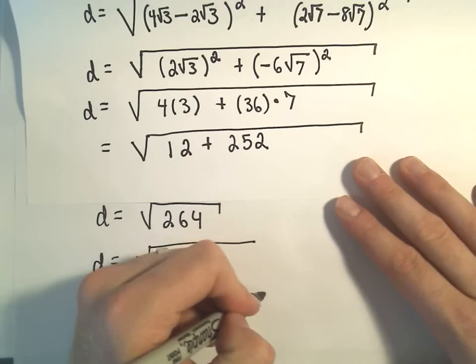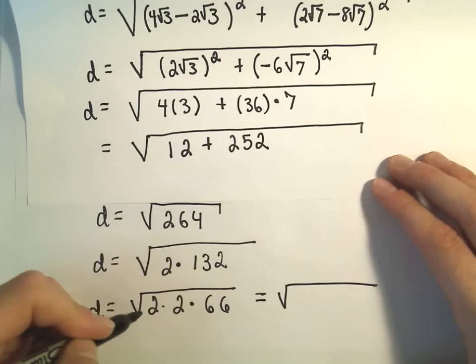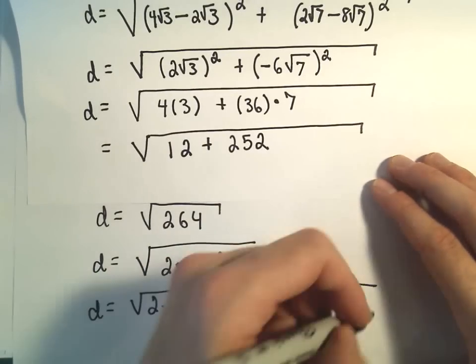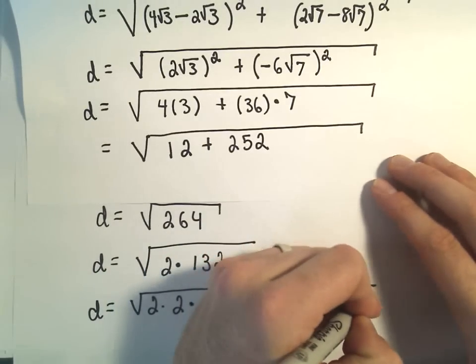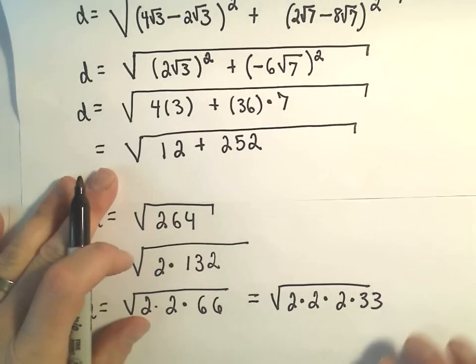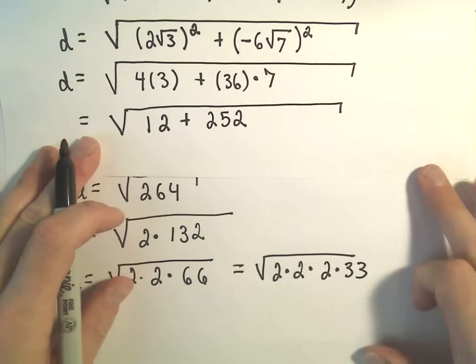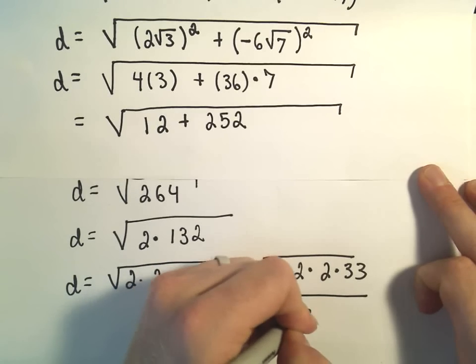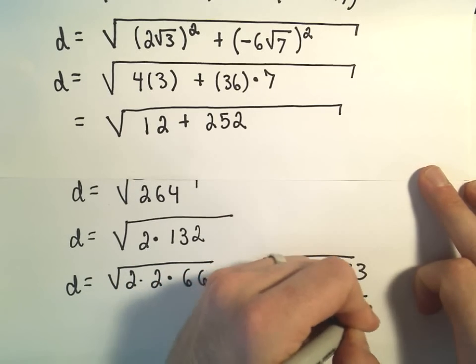Now we can factor again. So we have 2 times 2, I'm leaving that stuff underneath there. 66 again is even, so I think we could write that as 2 times 33. We could factor this one more time. So we have 2 times 2 times 2 times 3 times 11.